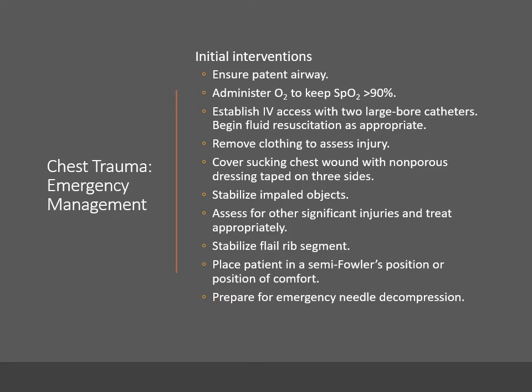Initial interventions for any patient with chest trauma include ensuring a patent airway, administering oxygen to keep O2 saturation greater than 90%, establishing IV access with two large-bore catheters and beginning fluid resuscitation as appropriate, removing clothing to assess injury, and covering sucking chest wounds with a non-porous dressing taped on three sides. Additional interventions include stabilization of impaled objects with a bulky dressing — do not remove the object — assess for other significant injuries, stabilize flailed rib segments with the hand followed by large pieces of tape placed horizontally across the flailed segment, position the patient in semi-Fowler's or on the injured side if breathing is easier after cervical spinal injury is ruled out, and prepare for emergency needle decompression if tension pneumothorax or cardiac tamponade are present.